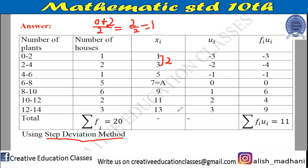What is the formula for u_i? If you remember, u_i = (x_i − a) / c, where c means h. This is the formula for u_i in the step deviation method.